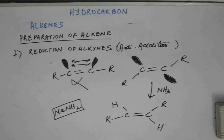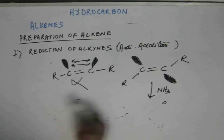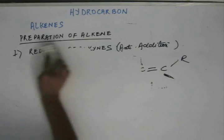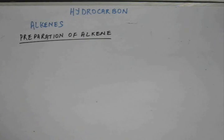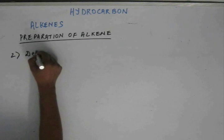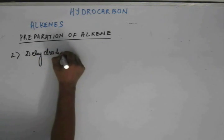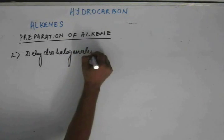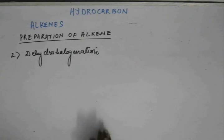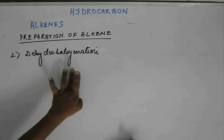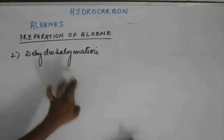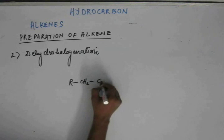So now we have learned two methods of preparation of alkene. The next method of preparation would be dehydrohalogenation. Decarboxylation means removing of carboxyl group; dehydro means removing of hydrogen; dehalogenation means removing of halogen. Dehydrohalogenation means removing of both hydrogen and halogen.